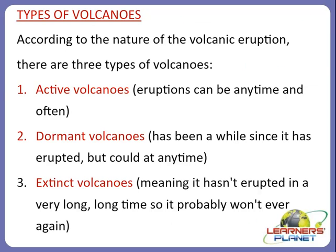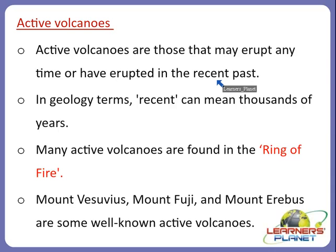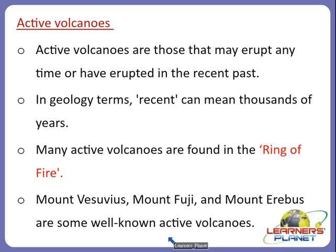Active volcanoes are those that may erupt anytime or have erupted in the recent past — in geological terms, recent can mean thousands of years ago. Many active volcanoes are found in the Ring of Fire. Mount Vesuvius, Mount Fuji and Mount Erebus are some well-known active volcanoes.